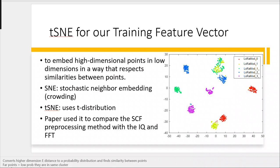I did some brief reading about the t-SNE, which is a machine learning algorithm. The main idea of t-SNE is that it takes high-dimensional data — for example, if a feature vector has more than five features, like a hundred, five hundred, two hundred, or a thousand features — we are dealing with high-dimensional data where we don't just have X and Y.